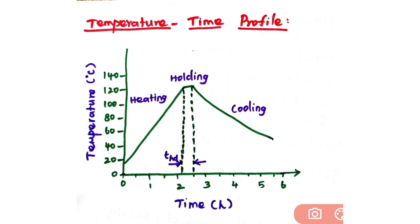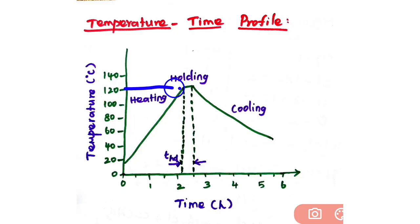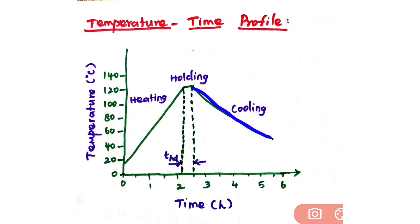This is the temperature-time profile for batch heat sterilization. Raising the temperature of the medium in large fermenters can take a considerable period of time, depending upon the rate of heat transfer from the steam or electrical element to the medium. There are three periods: the heating period, the holding time, and the cooling period. Once the sterilization temperature of 121°C is reached, the temperature is held constant for a particular period known as the holding time.